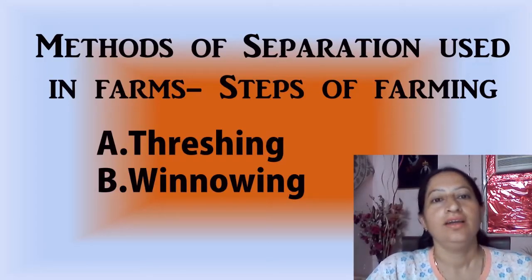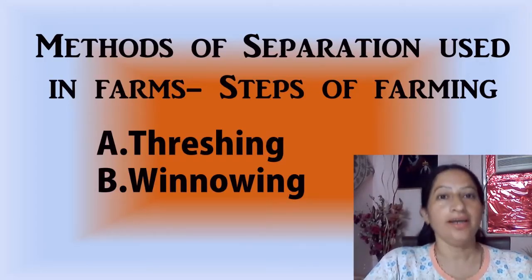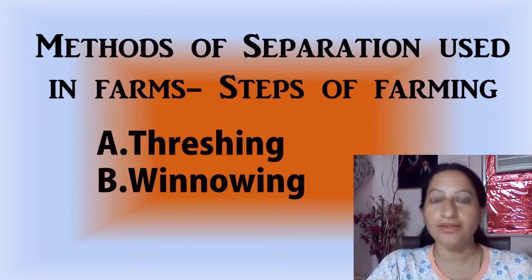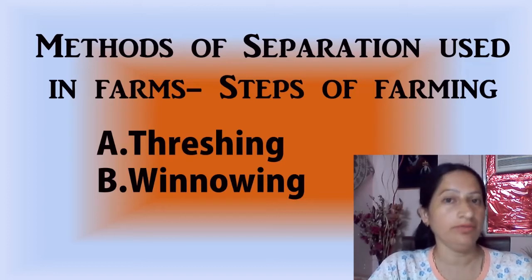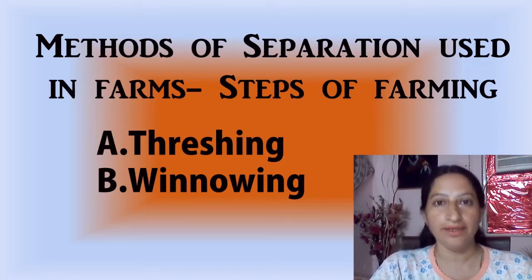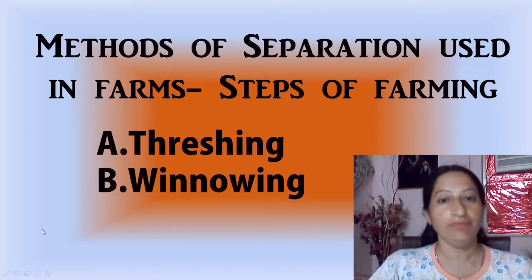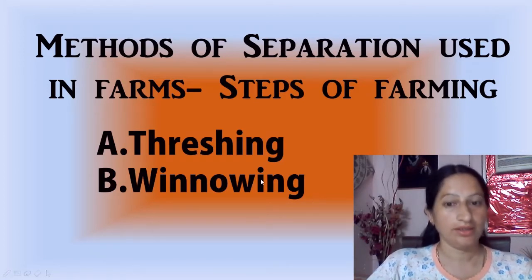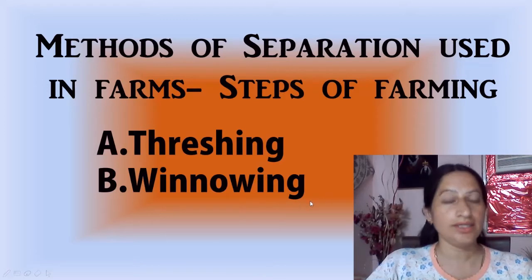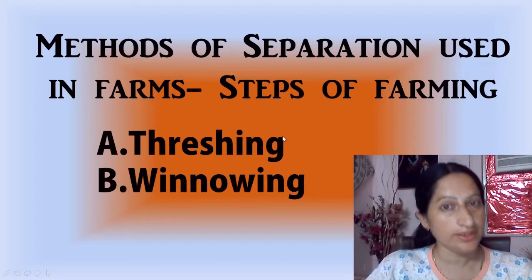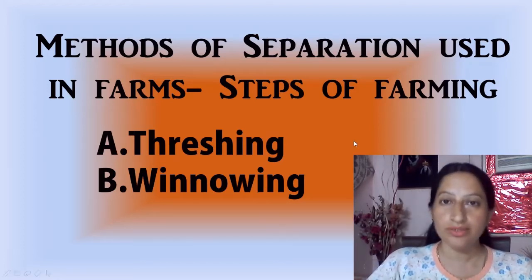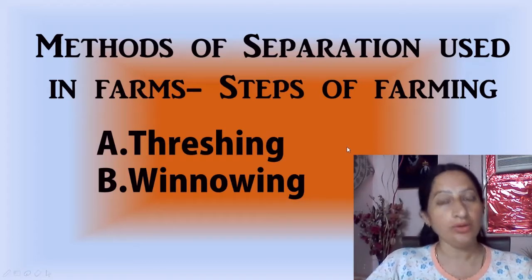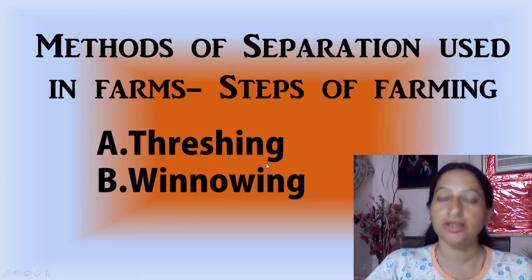Hello students. Let's understand today about the methods used in farms. These two steps of farming are very important for a farmer — threshing and winnowing. Let's go further and understand what threshing and winnowing are, what tools are used for them, and how they are different from each other, with the help of various images of farms.